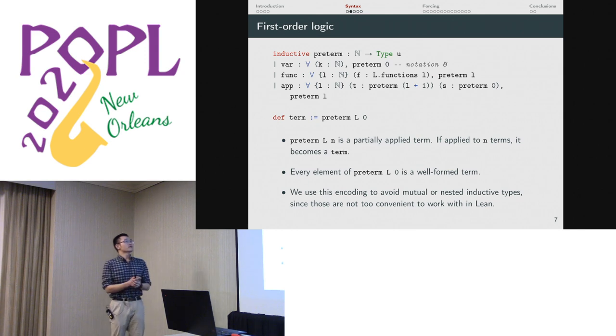We implemented terms in first-order logic in a special way. We used partially applied terms. These things are parameterized by a natural number that says how far away they are from being fully applied. So if you have a K-ary function symbol, that becomes a preterm at level K. When you apply it to a single term, that fills in an argument and brings it down to K minus one. So the terms are just preterms at level zero. What this means is that all our terms are well-formed just by type checking. We don't have to carry around extra proofs of well-formedness or vectors of terms with proofs that the vectors are the right length. It's just baked into the type system. That was really nice.